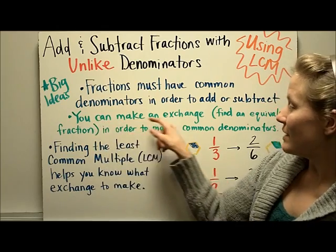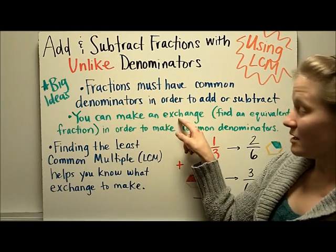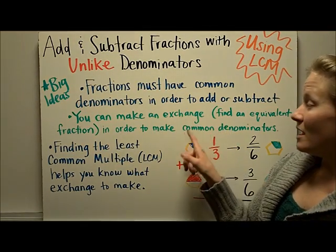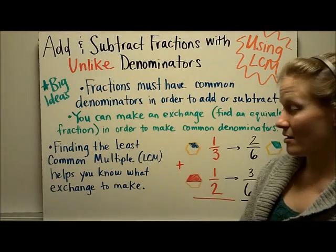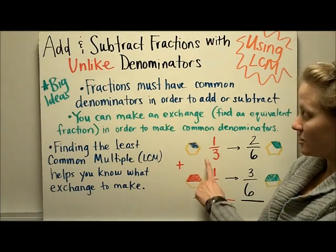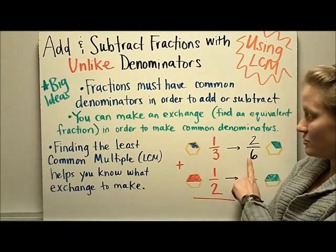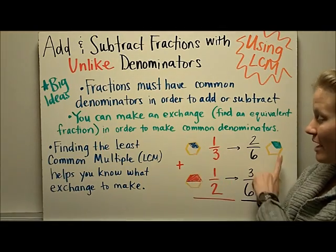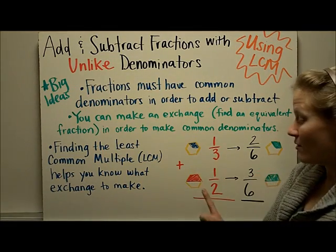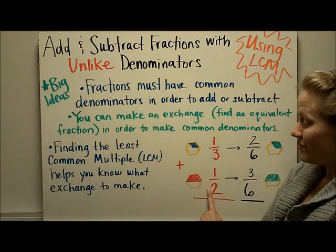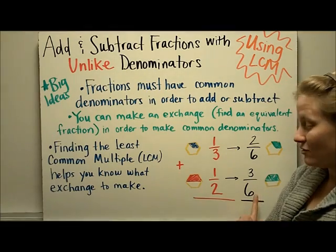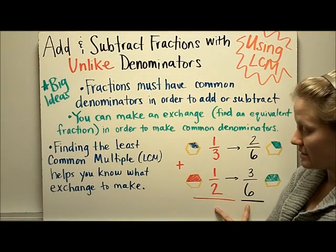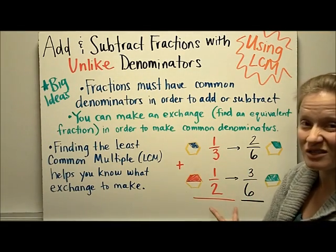Second, you can make an exchange — or in other words, find an equivalent fraction in order to make a common denominator. So we can exchange the one-third for two-sixths. We can model that with fraction blocks, as we did in the last video. And we can make an exchange of one-half to three-sixths, because these are equivalent fractions.